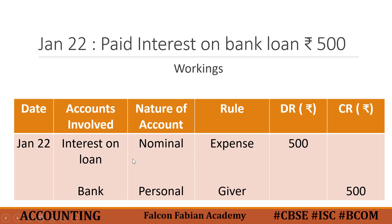To summarize: the two accounts are interest on loan and bank. The nominal account rule applies to interest on loan — it is an expense, so it is debited by 500. The bank account is an account of an organization, so the personal account rule applies. The business bank account is the giver of this money, so it is credited by 500.